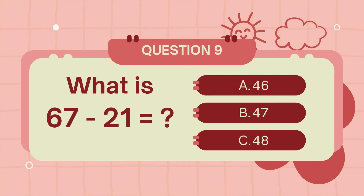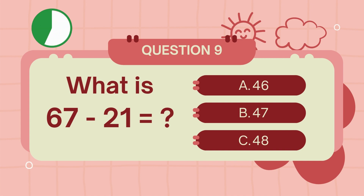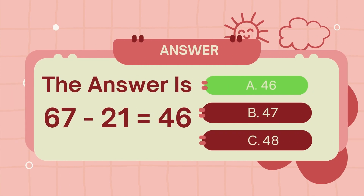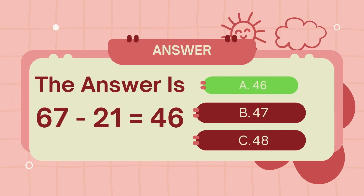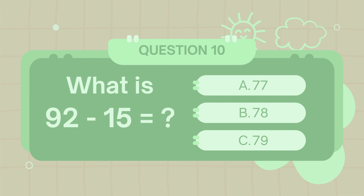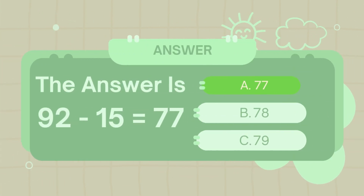What is 67 minus 21? The answer is 46. What is 92 minus 15? The answer is 77.